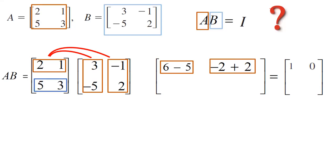You're going to repeat the same thing for the second row. Find the dot product between the second row and first column, which is 15 minus 15, or 0. And finally, the dot product between the second row and the second column, which is negative 5 plus 6, or 1.